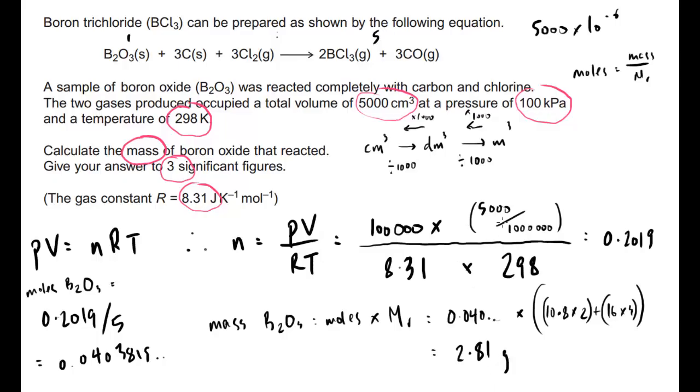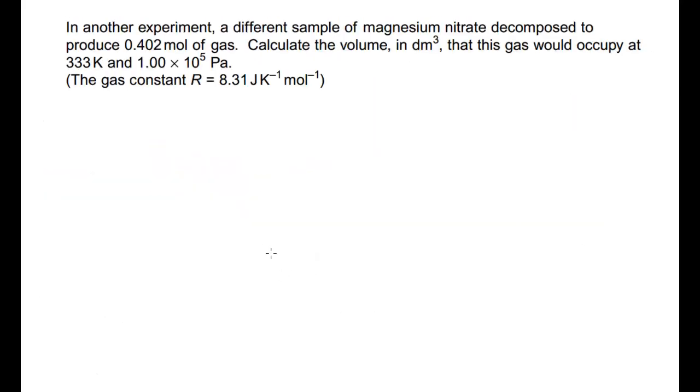So, just recap on this one, what we've done. We worked out the total number of moles of gases produced. We divided that by five to equate for the ratio of one to five. That gave us the number of moles of boron oxide. We then converted that number of moles using the MR to the mass as was requested there. Okay, one final question and then we're done.